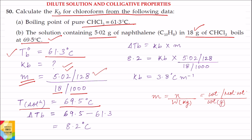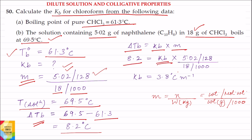Now elevation in boiling point will be equal to boiling point of solution, that is 69.5 degree centigrade, minus boiling point of pure solvent, that is 61.3 degree centigrade, and this is equal to 8.2 degree centigrade. So delta Tb value is 8.2, Kb we have to find out, and this is the value of M, that is molality.